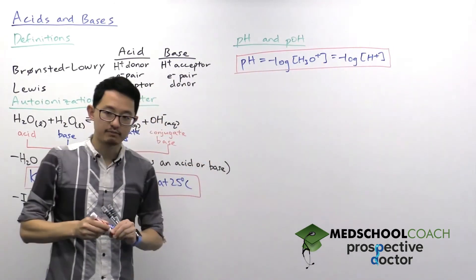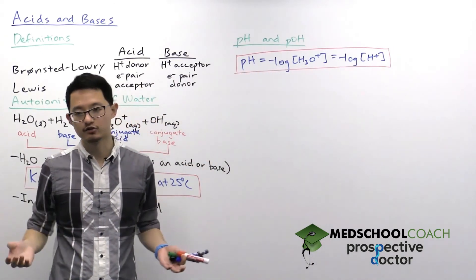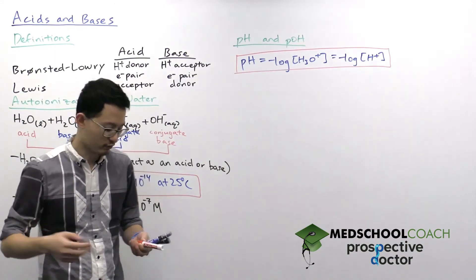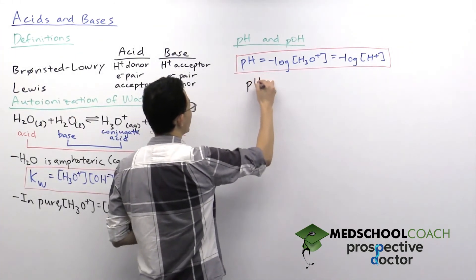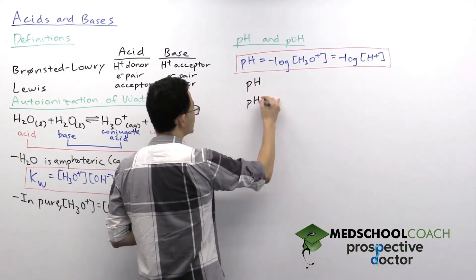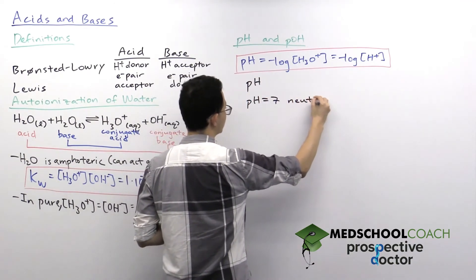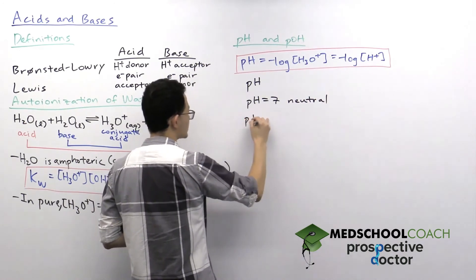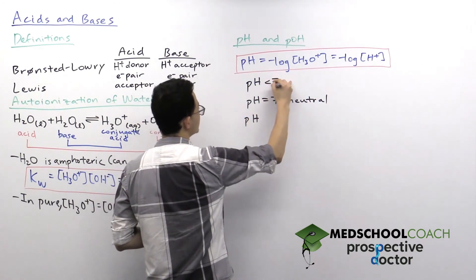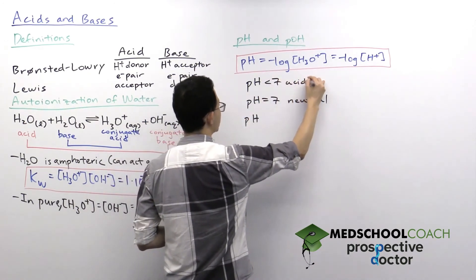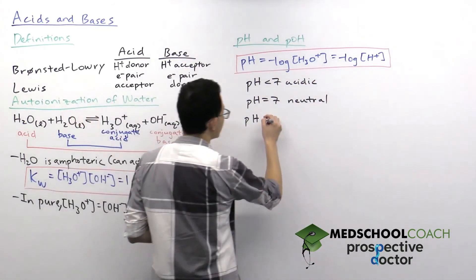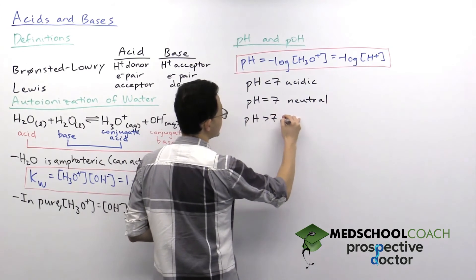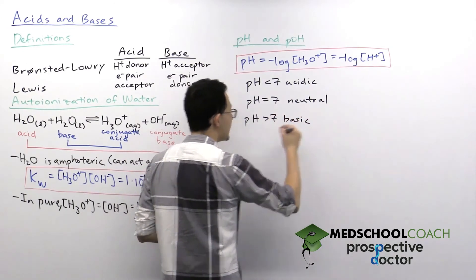What you need to know about the pH is that generally the values range between 0 to 14. And if you have a pH value of 7, that means your solution is neutral. If your pH is less than 7, that means your solution is acidic. And if your pH is greater than 7, your solution is basic.